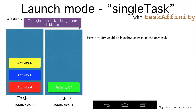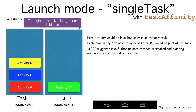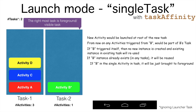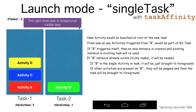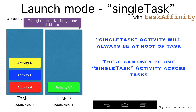To summarize: a new activity with a launch mode as single task would be launched at the root of a new task. Any new activities triggered from that single task activity — in this case Activity B — would be part of that same task. If Activity B triggers itself again, no new task is created and no new instance of Activity B is created. If the instance already exists it will be reused, and if B is in a single-activity task it will just be brought back to the foreground. Any activities on top of it will simply be popped from the stack. In a nutshell, a single task activity will always be at the root of its task, and there can only be one single task activity across tasks.